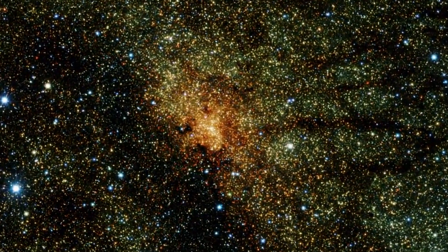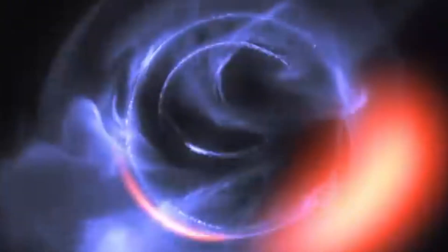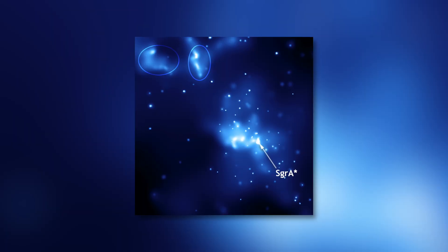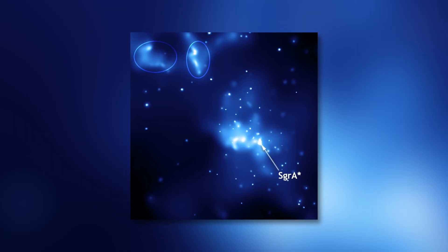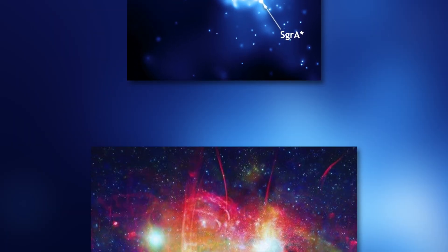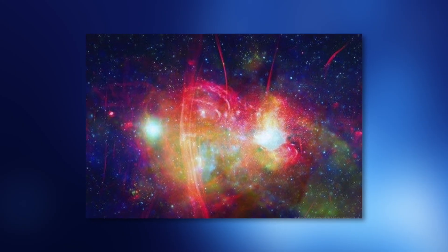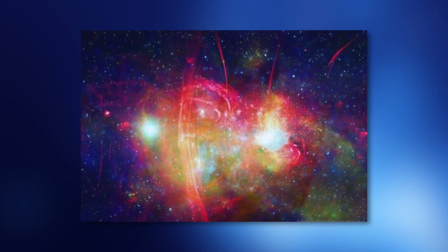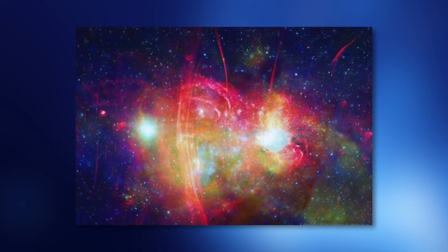At the center of the Milky Way is Sagittarius A star, a giant black hole surrounded by a huge cloud, or bubble, of interstellar gas. An interstellar team of scientists has now discovered a dense and cold gas that was ejected from the center of the Milky Way like a bullet. The study also raises new questions about what is happening in our galactic center right now.